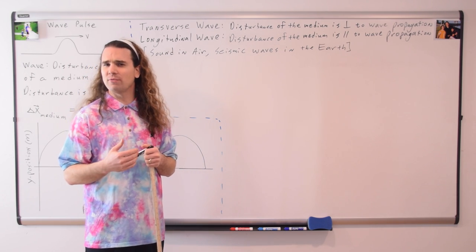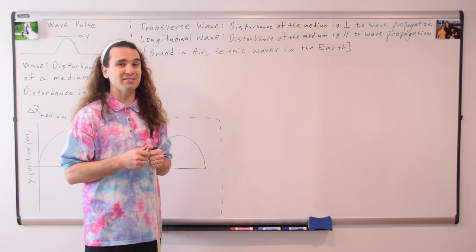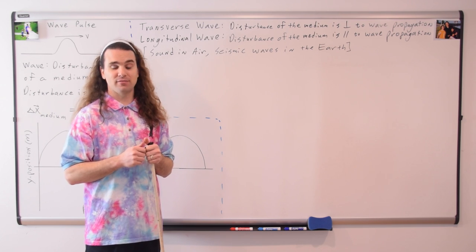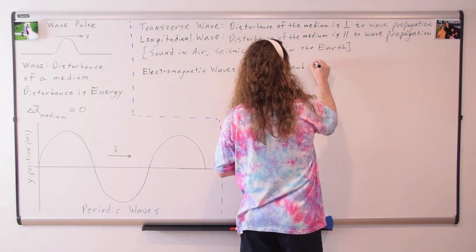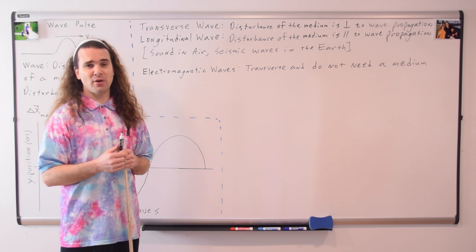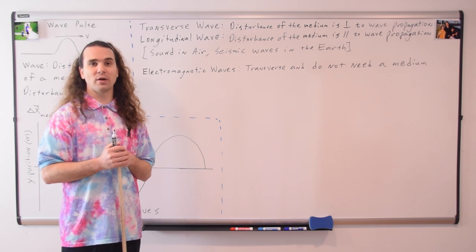So far, every wave we've talked about requires a medium to travel through. However, there is one type of wave that does not require a medium — electromagnetic waves. Electromagnetic waves do not need a medium to travel through, and they are transverse waves — alternating electric and magnetic fields. Electromagnetic waves can propagate through the vacuum of space.